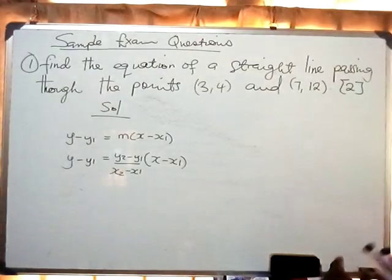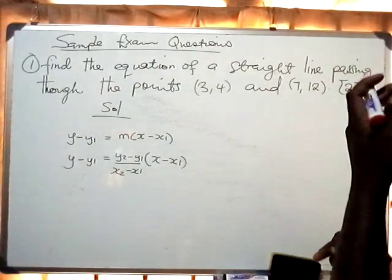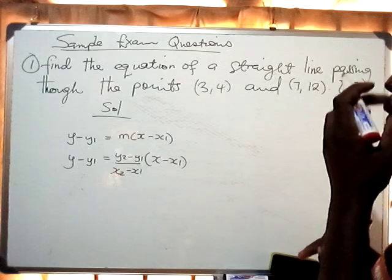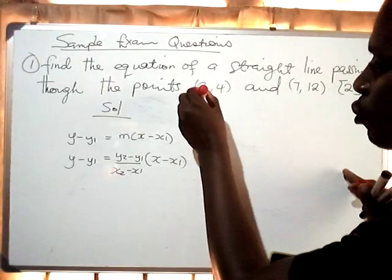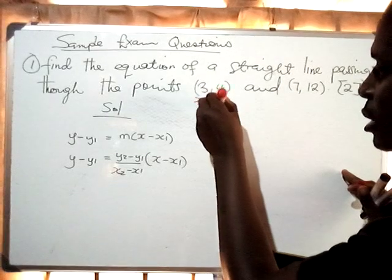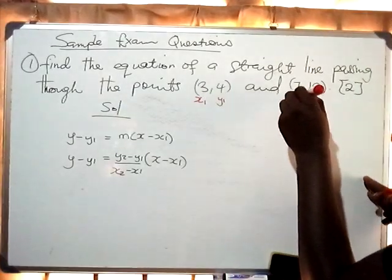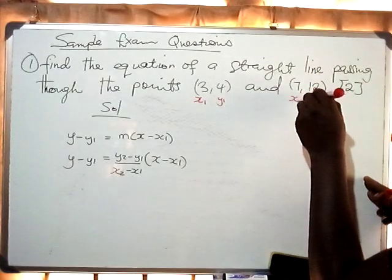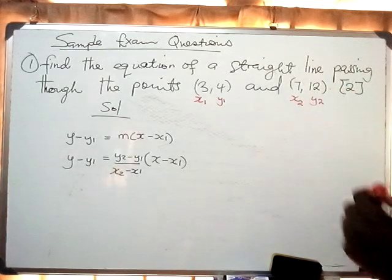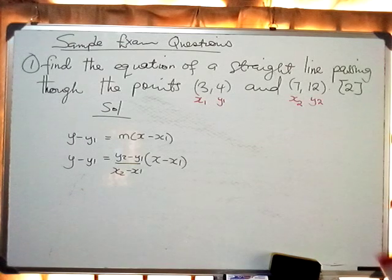Now since we have two points, which one will be our x1, y1 and our x2, y2? We treat the first point as x1 and y1, and the second point as x2 and y2. Now we move to the next step — it's just a matter of substituting.